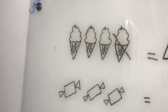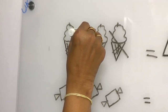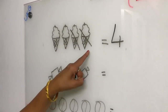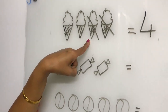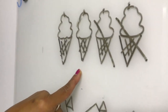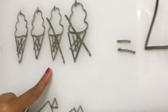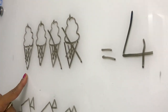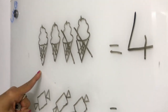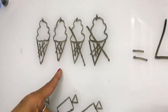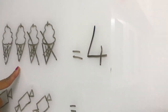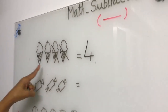One ice cream I gave to Rama, and one more ice cream I have given to Uuma. So one I gave to Rama, another one I gave to Uuma. Now how many remaining ice creams are there? Out of four, two ice creams I have given to my friends. How many remaining? One, two — two ice creams are there. When two is subtracted from four, remaining ice creams are two — answer is two.